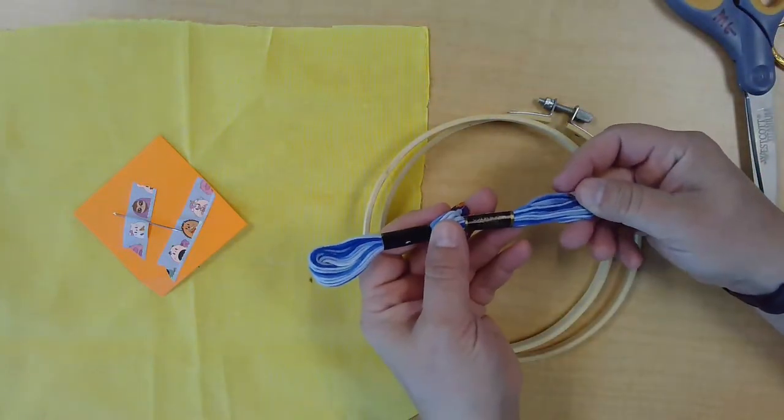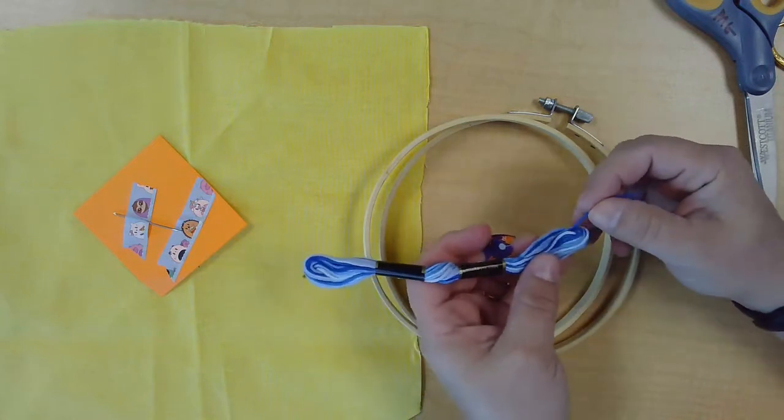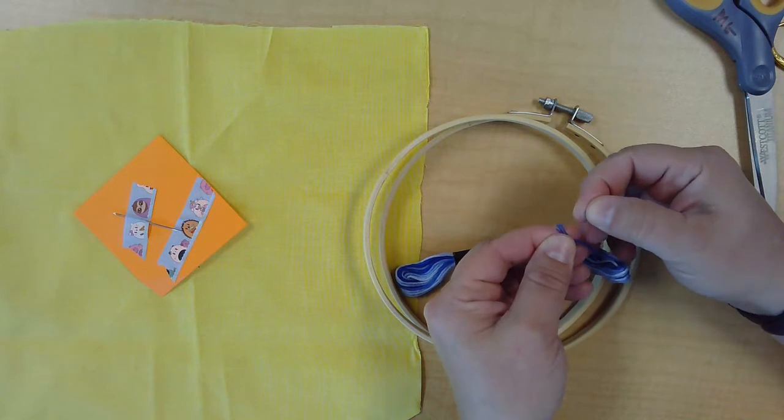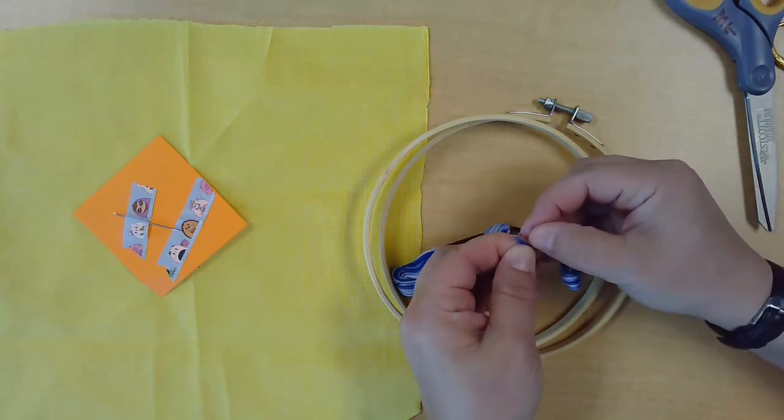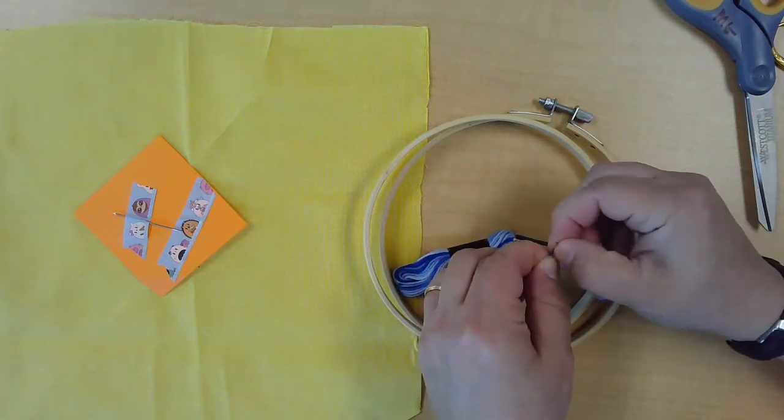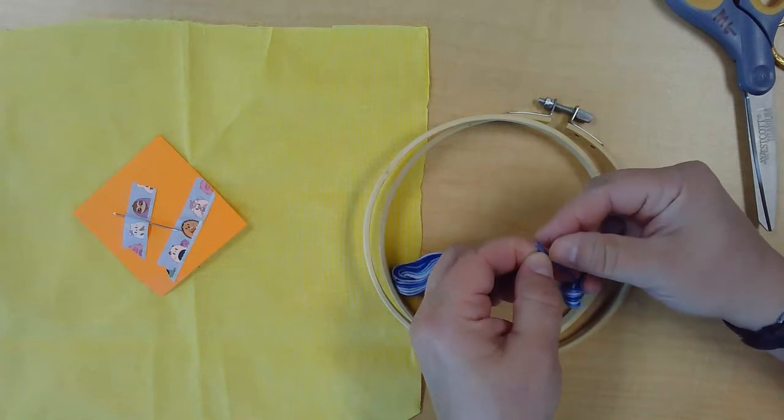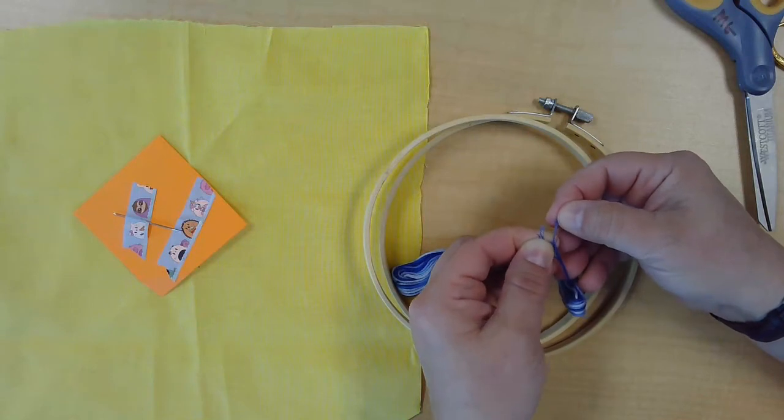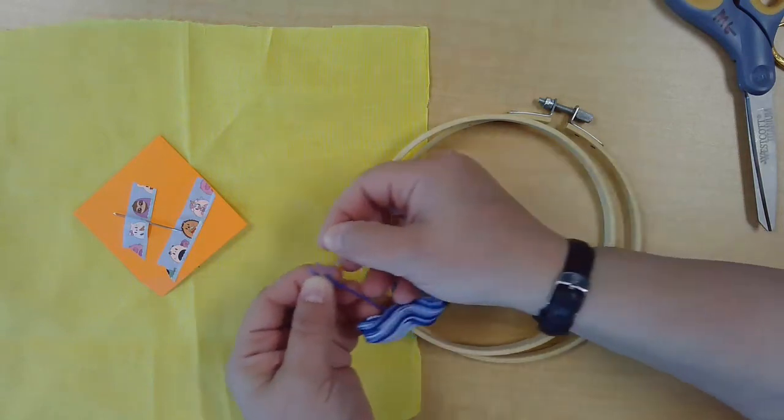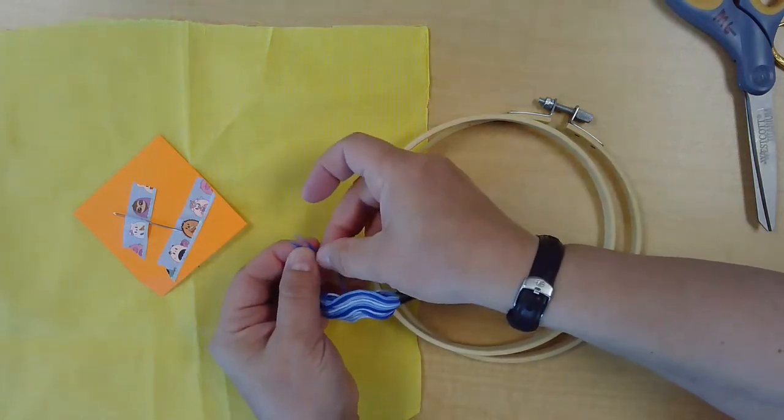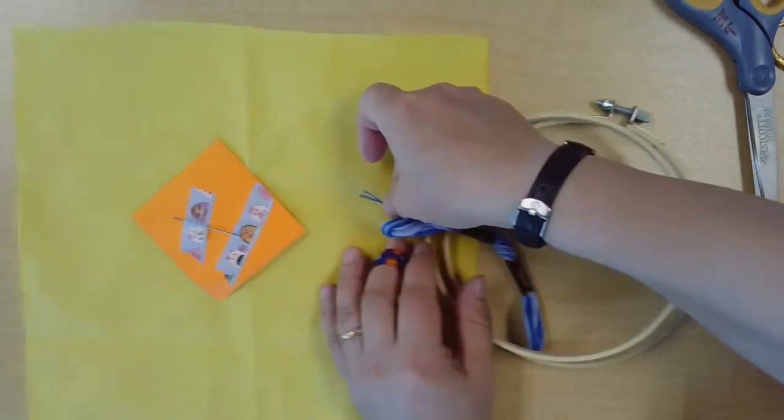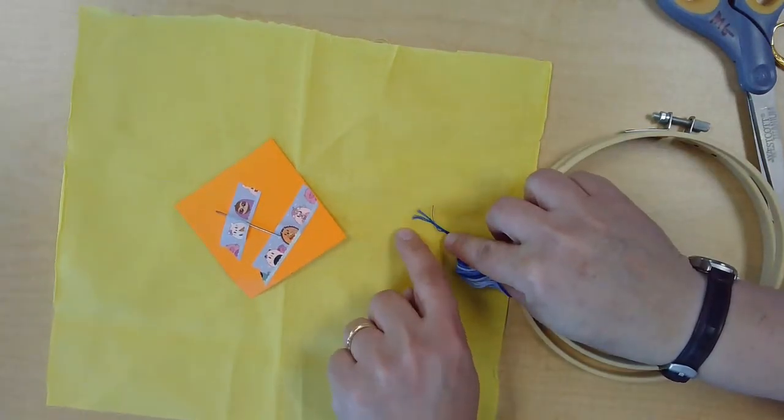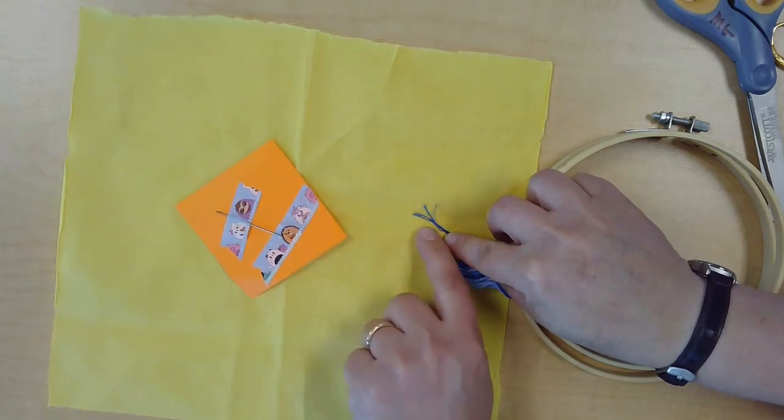Now your floss. Embroidery floss is sold in a skein, and it's meant to be divided into threads so that you can use thick threads or thin threads depending on your project. You can kind of see it in the edge of the video here. This one has got six strands, and maybe if I hold it up against the yellow fabric you'll be able to see it better, that you can see are easily separated like that.